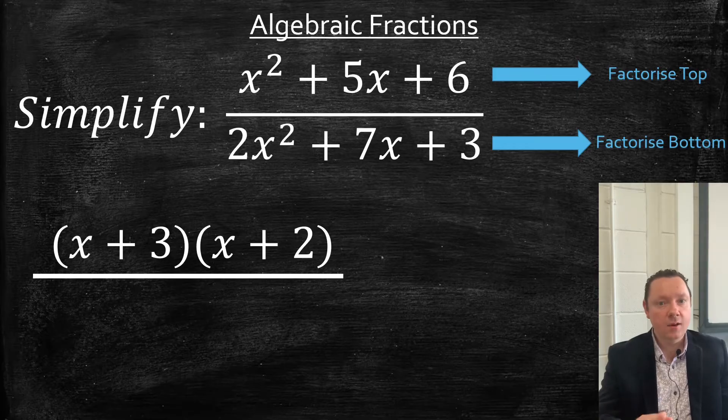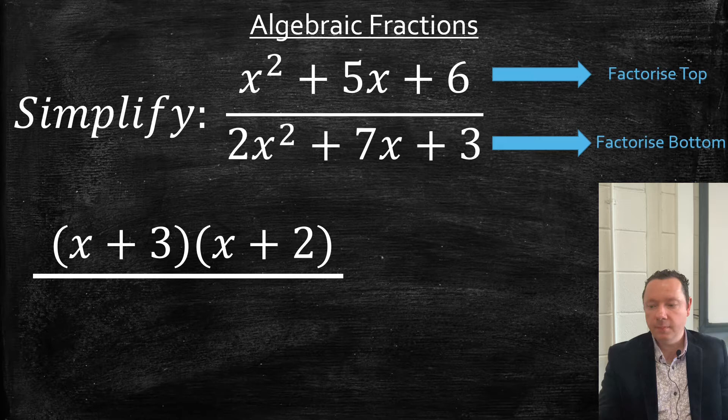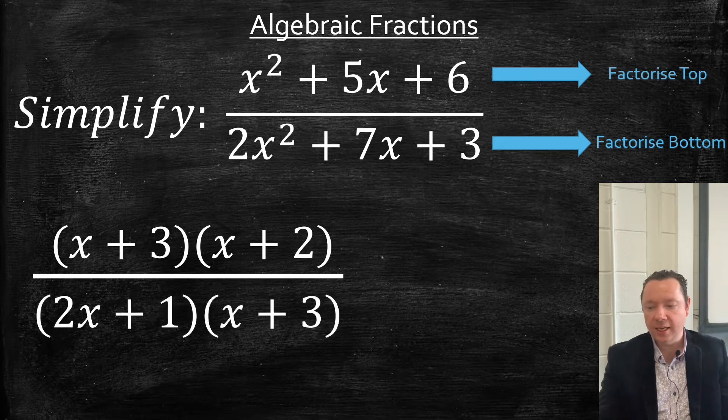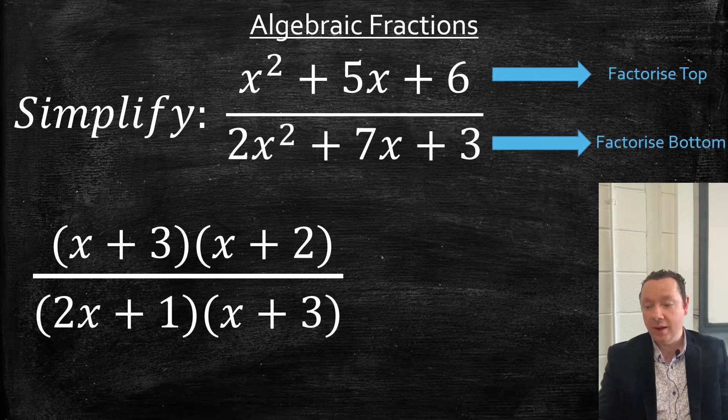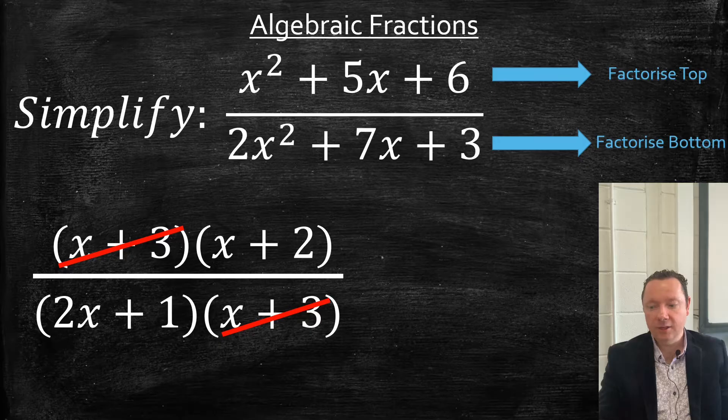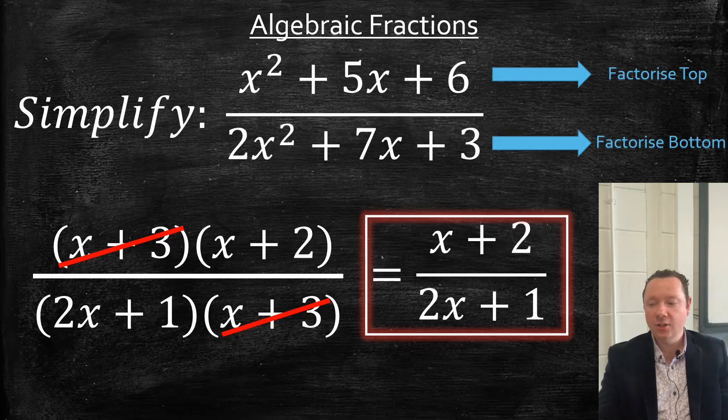The bottom one's really one of the more complicated ones. Have a look and see if you can do it. The answer is (2x + 1)(x + 3). You're looking for the same top and bottom, so then we can cancel the (x + 3)s. Goodbye there, leaving us just with (x + 2)/(2x + 1) and we're done.